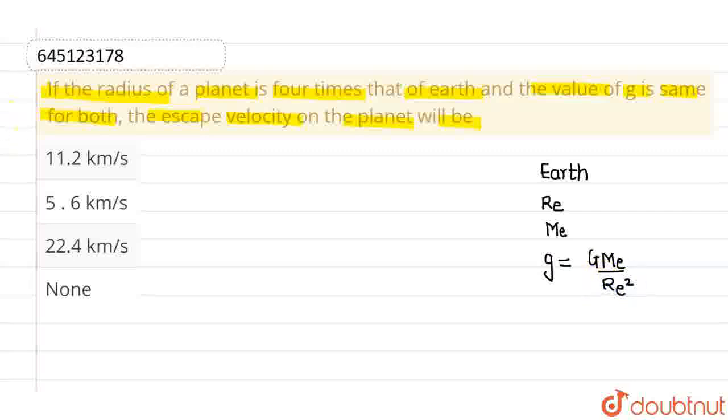Now, let's say we have another planet, which I'm naming as planet 1. Let's say its radius is R1, which is nothing but 4 times the radius of Earth, which is 4Re.